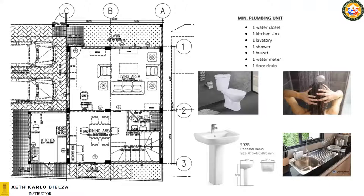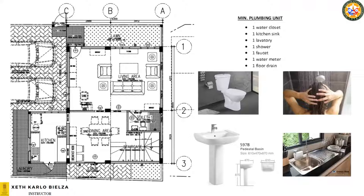What is so important about this sixth plumbing principle? In a house, there is basically a kitchen, and if you have a kitchen of course you have a kitchen sink — a lavatory for washing dishes and food. And then for hygiene, a house must also have a toilet and bath. The minimum requirement for a toilet and bath is a three-quarter bathroom, with fixtures: a shower, a water closet, and a lavatory.